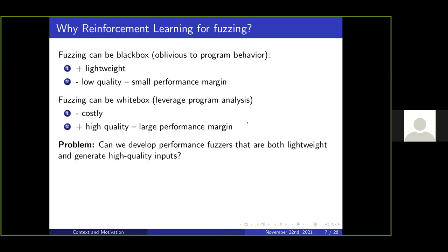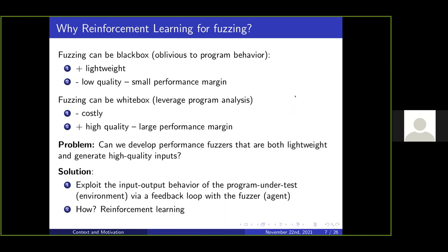Why reinforcement learning for software fuzzing? There are two paradigms: black box fuzzing, which is very lightweight but might give low quality inputs with smaller performance margins, and white box fuzzing, which leverages program analysis but can be very costly and doesn't scale to tools as sophisticated as SMT solvers. The problem we want to solve is: how can we get the best of both worlds? How can we exploit the input-output behavior of the program under test while incorporating a feedback loop within the fuzzer? This corresponds to the reinforcement learning agent within the tool.